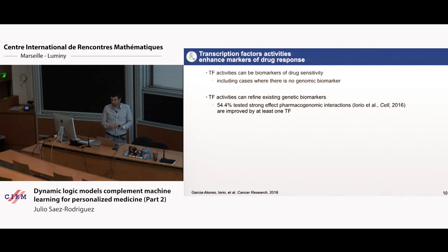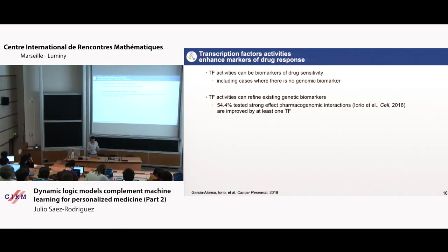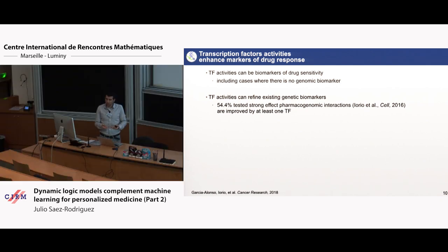If you estimate transcription factor activities and then try to see if there is an association between the activity and the drug efficacy, what we found is that in a lot of cases where there is no genomic marker, you can find a transcription factor association with drug response. Or if there is a genomic marker — some mutation — the transcription factor allows you to further refine this information.